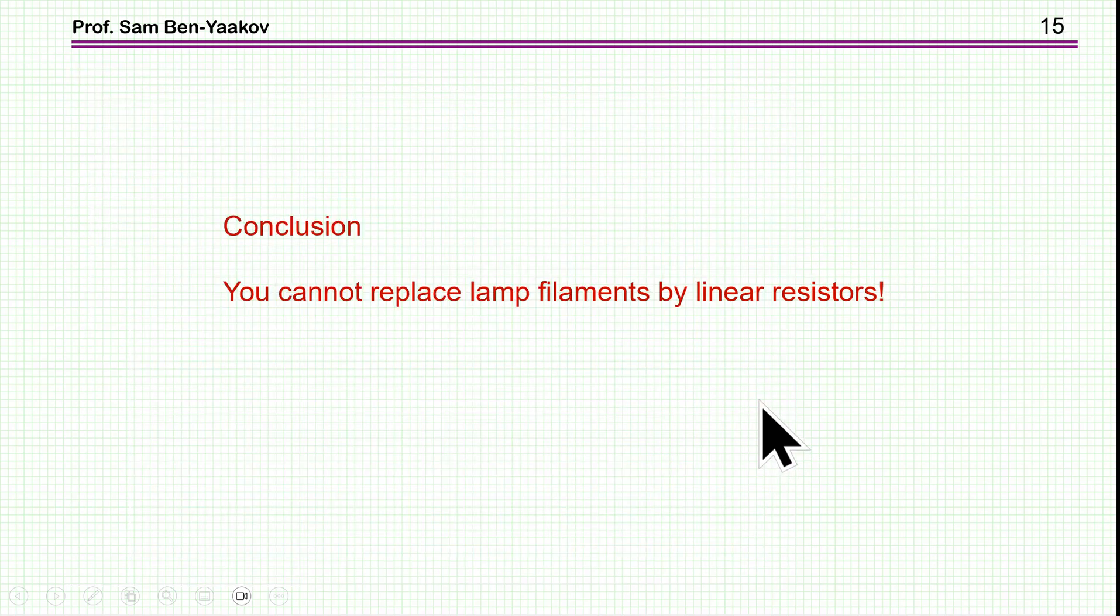So what is the conclusion here? Well, the conclusion is very clear. You cannot replace lamp filament by a linear resistor in general. Well, of course, in one particular case, you can do that. But for an involved situation like we have here, you have to know what is the voltage and what is the characteristic of the lamp.